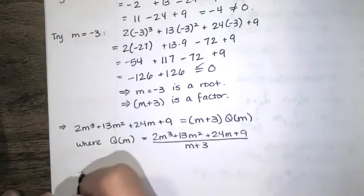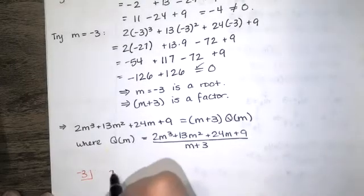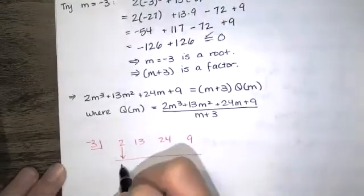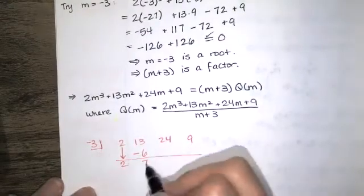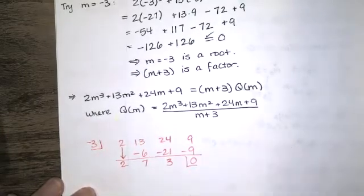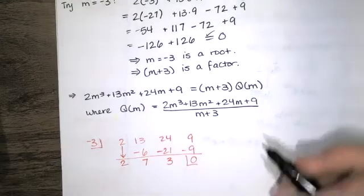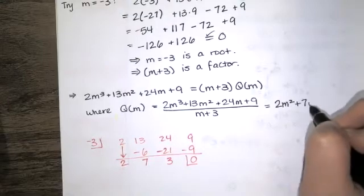We set the divisor equal to 0 and solve for m, giving negative 3 — the same as the root value. We list the coefficients of the polynomial, bring down the leading coefficient, and repeatedly multiply and add. So the third-degree polynomial divided by m plus 3 gives a quadratic, and q equals 2m squared plus 7m plus 3.